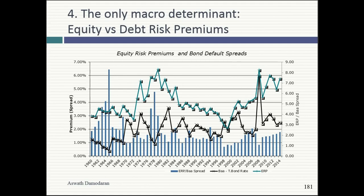Let me take two periods in the last 20 years where the two moved in different directions. In the 1990s, default spreads stayed high while equity risk premiums dropped and dropped. By end of 1999, the equity risk premium was 2% and the default spread for BAA was also 2%. As a CFO in 1999, the equity market was charging almost nothing for risk, so you could get a really high price even if you were risky. The bond market was charging the typical amount. So where did companies raise money? Equity — like it was going out of style. Those telecom companies raising stock even though they had no use for it — that was at the core of the dot-com boom and bust. We made equity too cheap.